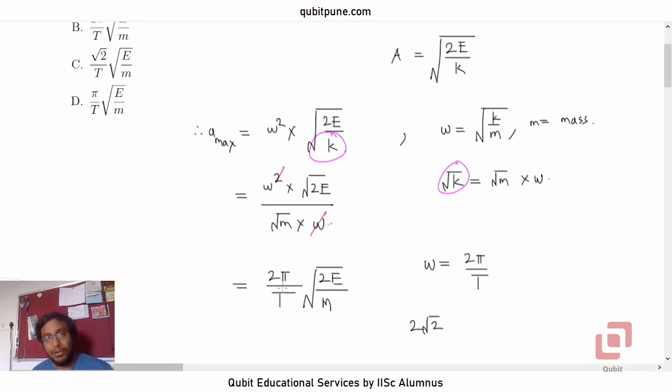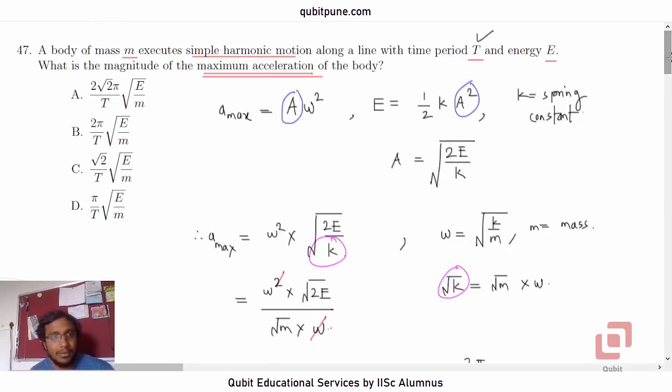But the coefficient is not 2, not root 2, but 2 root 2. 2 root 2 is there in option A. So, 47th option A.